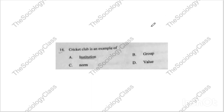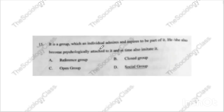Question number fourteen: 'What is a cricket club?' — institution, group, norm, or value? The correct answer is A. Always remember, this question comes very frequently. A cricket club is an institution because, just like institutions have rules, regulations, and procedures, so does a cricket club. A group does not have as many formal elements, and neither do norms or values.